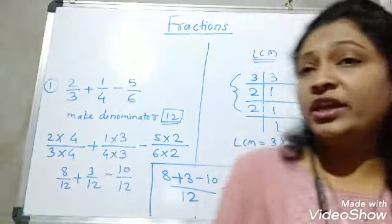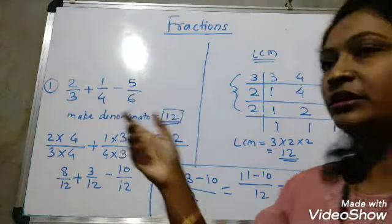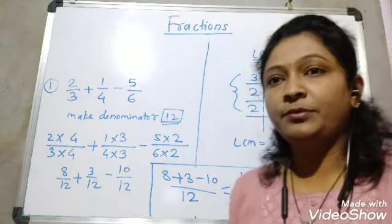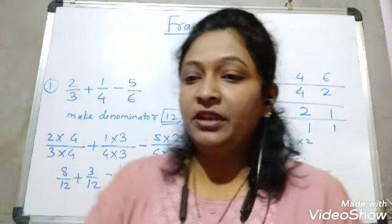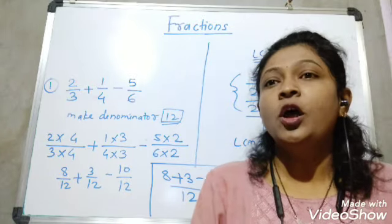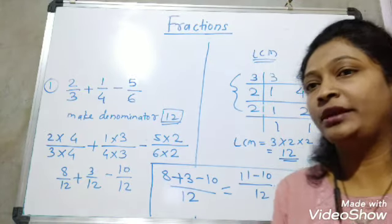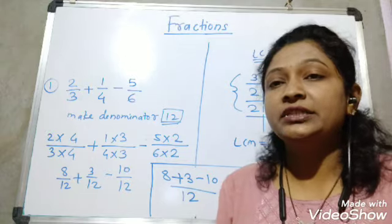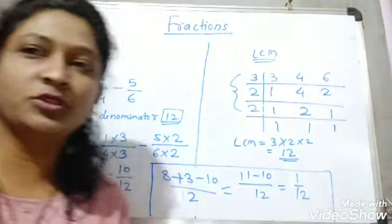Understand, students? If fractions are like, you can directly add and subtract by adding only the numerators. If they are unlike, you can use cross multiplication or the LCM method. If you liked this video, please like, share, and subscribe. Watch my LCM, integers, and other lessons videos too. Bye!